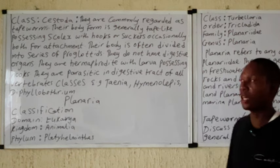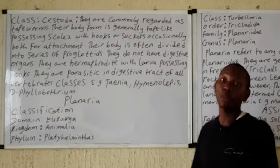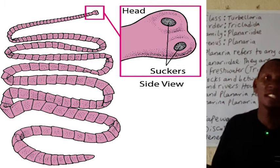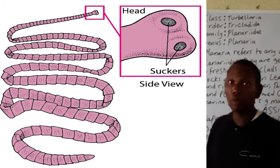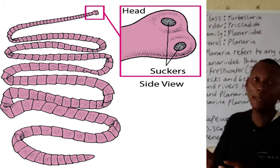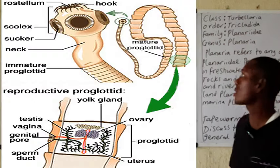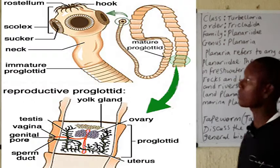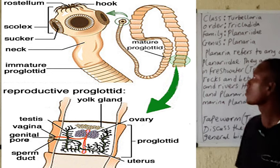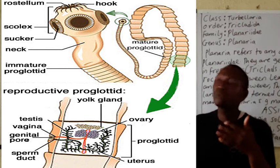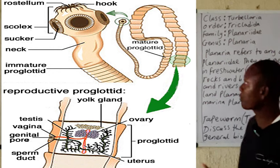The next class is Cestoda. Cestoda is a group that is very common to humans and they are commonly regarded as the tapeworm. The body form actually gives the nomenclature 'tapeworm' because they are tape-like, possessing a scolex which has hooks or suckers for attachment.